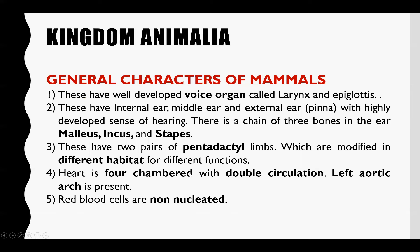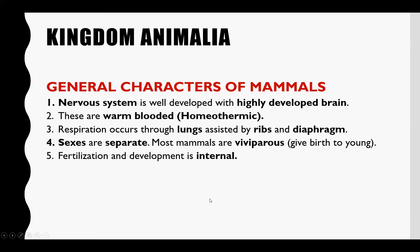ان کا heart بھی four-chambered ہے جس طرح birds کا تھا، اور oxygenated blood totally separate ہوتا ہے — یہ double circuit heart ہوتا ہے۔ اس میں دو طرح کی circulation ہوتی ہے: systemic circulation جو body اور heart کے درمیان ہے، اور pulmonary circulation جو heart اور lungs کے درمیان ہوتی ہے۔ Left aortic arch موجود ہوتی ہے جو aorta کے through body میں blood supply کرتی ہے۔ Red blood cells non-nucleated ہوتے ہیں۔